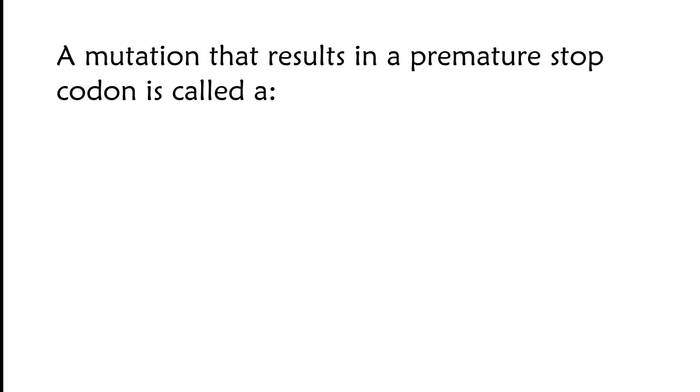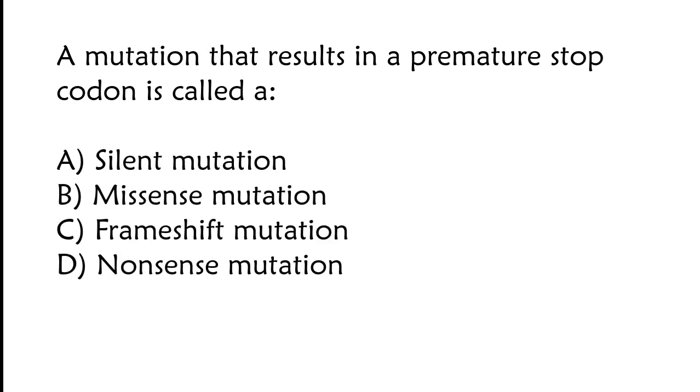A mutation that results in a premature stop codon is called silent mutation, missense mutation, frameshift mutation, or nonsense mutation. The correct answer is option D, nonsense mutation.